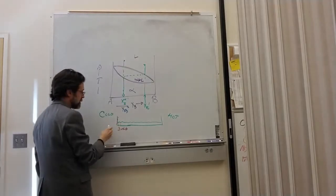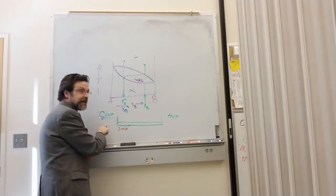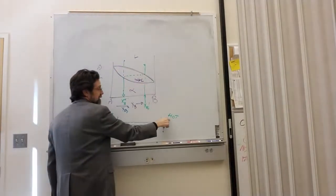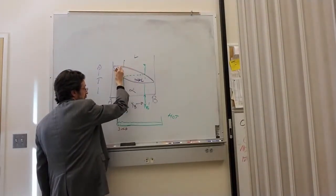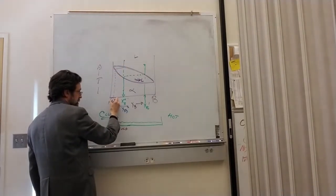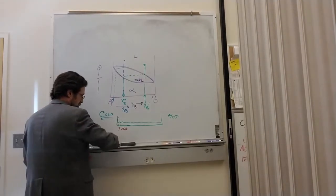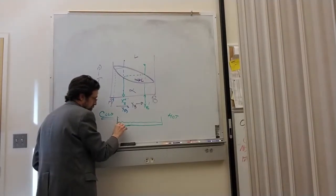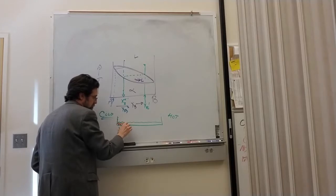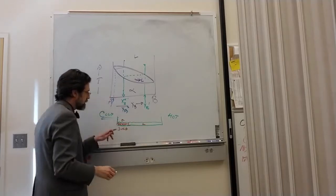And again, we cool it down, preferentially from the left side, keeping the right side hot. Cool it down. The first solid that forms, over here, alpha liquid, that's going to be xB2.